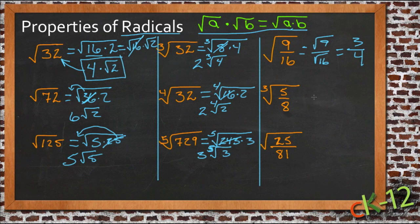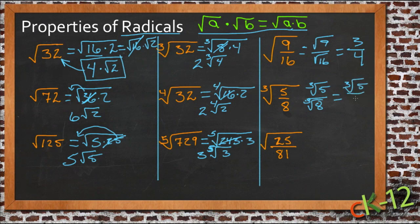Cube root of 5 8ths is the cube root of 5 over cube root of 8. Cube root of 5 we don't know, cube root of 8 we do. So then we have the cube root of 5 over 2.